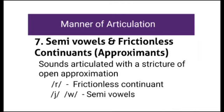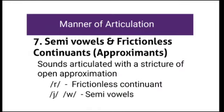So the next classification is semi-vowels and frictionless continuants. Both these are called approximants. Here, sounds are articulated with a structure of open approximation. Open approximation means the gap between the articulators is wide enough for the air to escape without any friction. The articulators are not very close, so air moves freely — that is called open approximation.